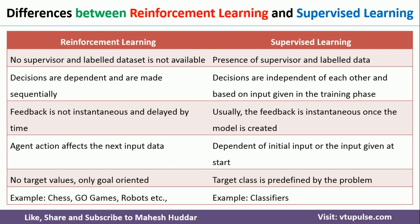These are some of the differences between reinforcement learning and supervised machine learning. In reinforcement learning, we don't have any supervisor or label dataset. Because of this, reinforcement learning has to get experience from the actions the agent performs, and based on that experience it will learn the model. But in supervised machine learning, we have a supervisor and labeled data with which the model is trained, and there is a supervisor to say whether the model is working fine or not.